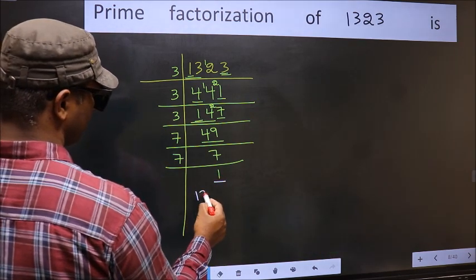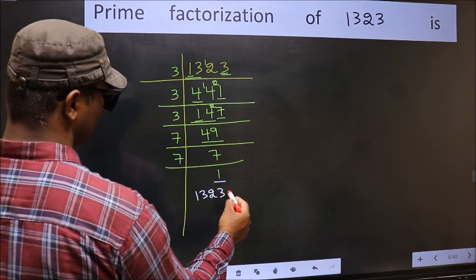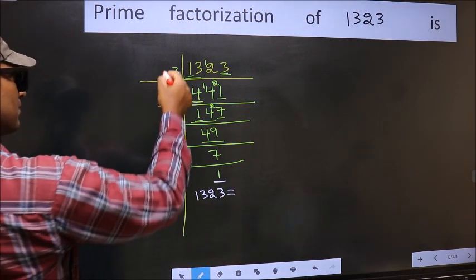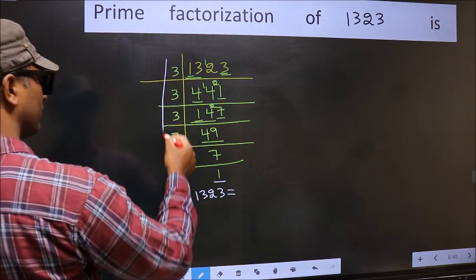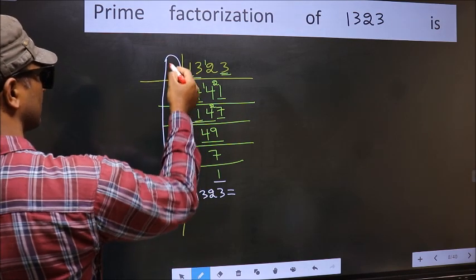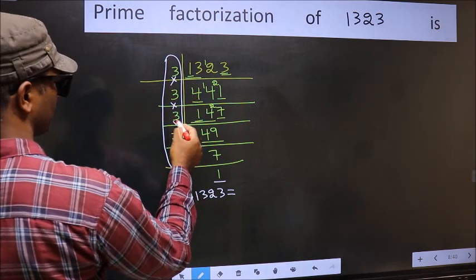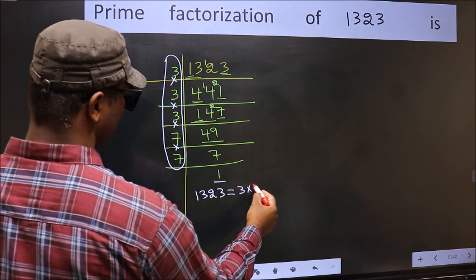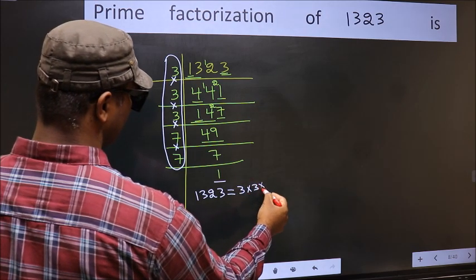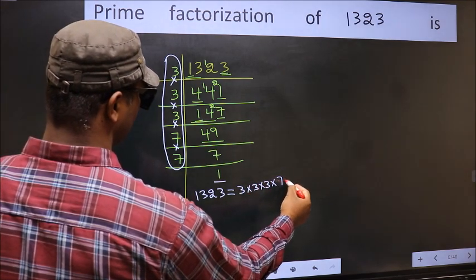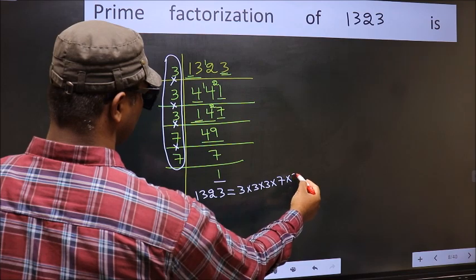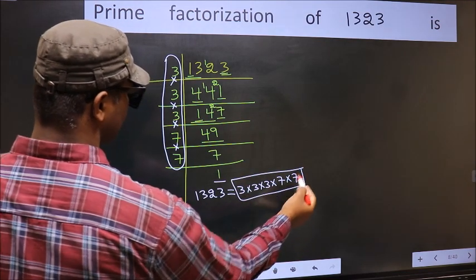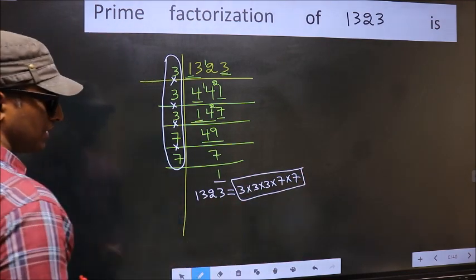So the prime factorization of 1323 is the product of these numbers: 3 × 3 × 3 × 7 × 7. This is the prime factorization of 1323.